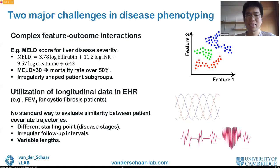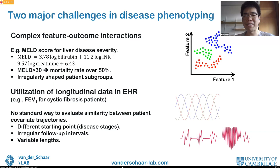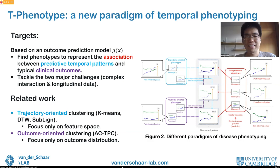For diseases like cystic fibrosis, temporal variation patterns in patient covariates are usually predictive of patient outcomes, making effective utilization of longitudinal data another challenge. Unlike tabular data in static settings, there's no standard way to evaluate similarity between patient trajectories. Follow-ups may start at different disease stages, observation intervals may not be fixed, and longitudinal records may have very different lengths, making direct comparison of patient trajectories infeasible in most scenarios.